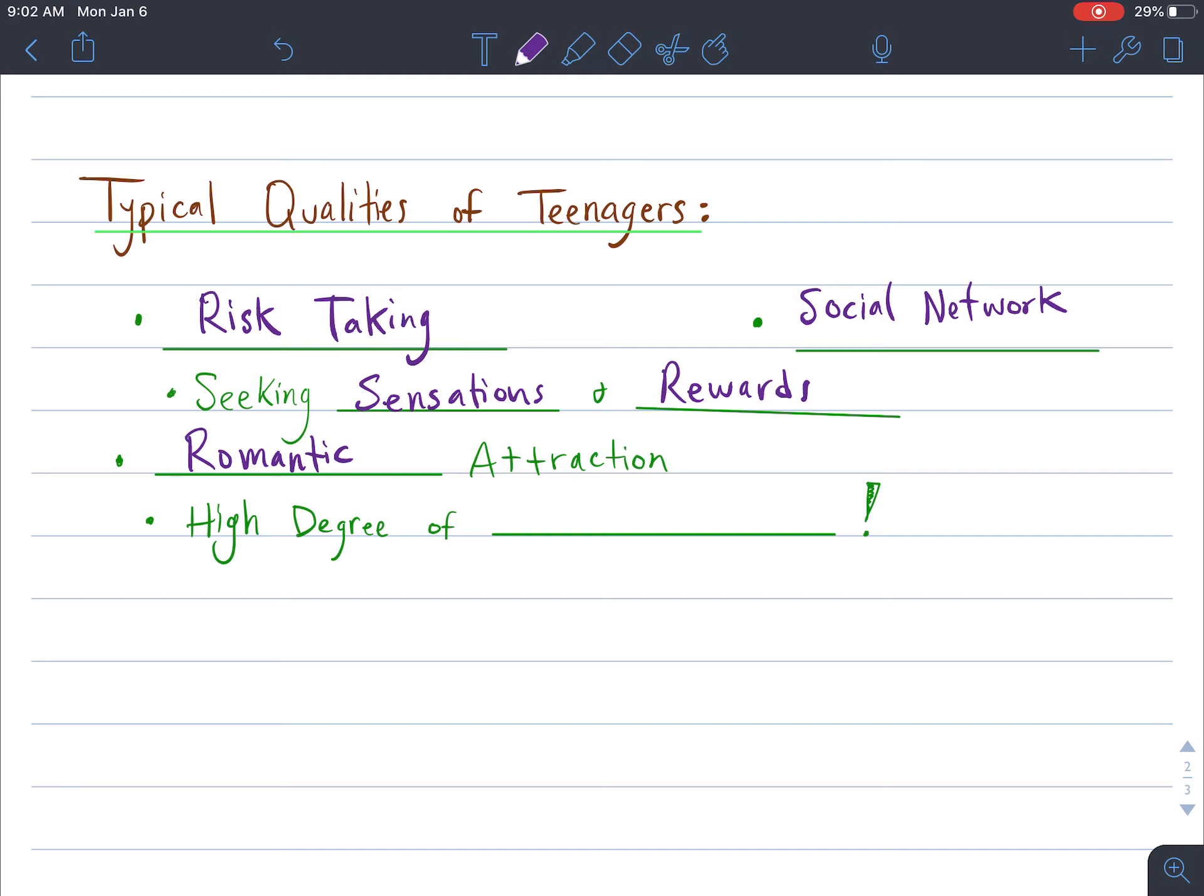And the most crazy awesome thing about being a teenager is that you have a high degree of neuroplasticity. So regardless of what happened in your childhood, you are gaining the ability to change your brain, to cause your brain to be like a plastic where it can mold and form based on the new environment that you're creating.